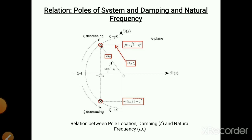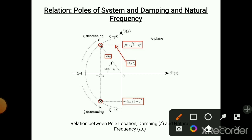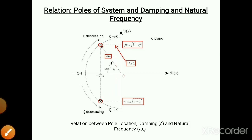Damping is very important: the system is stable when damping is high, so damping is useful for making the system stable. Natural frequency omega_n is also located on the y-axis. Whatever pole is there, it is located at omega_n distance from the origin. So there is a relationship between damping and natural frequency with respect to the poles of the system.